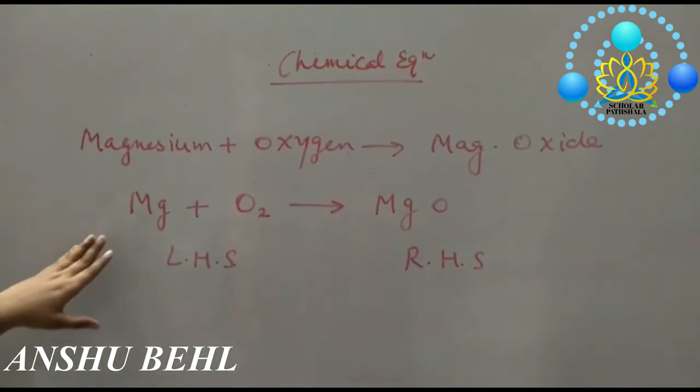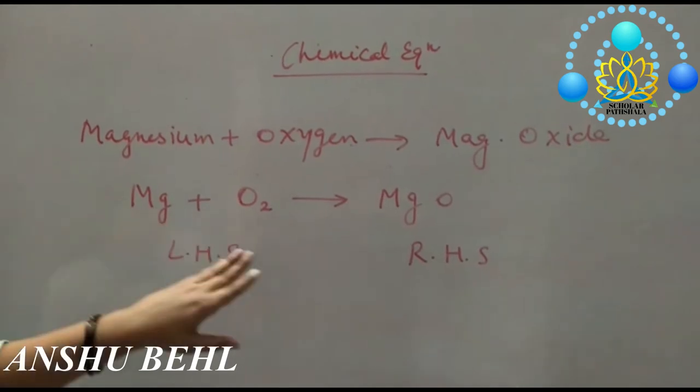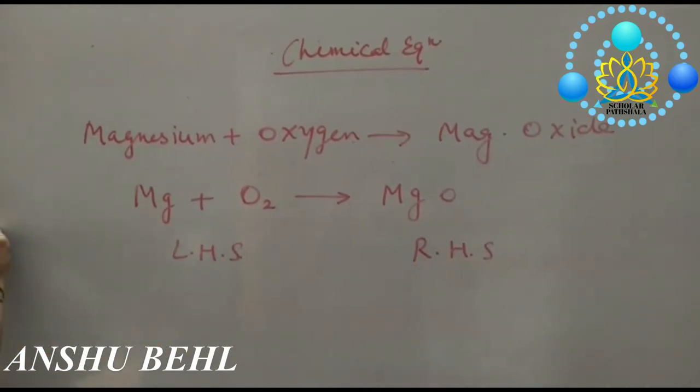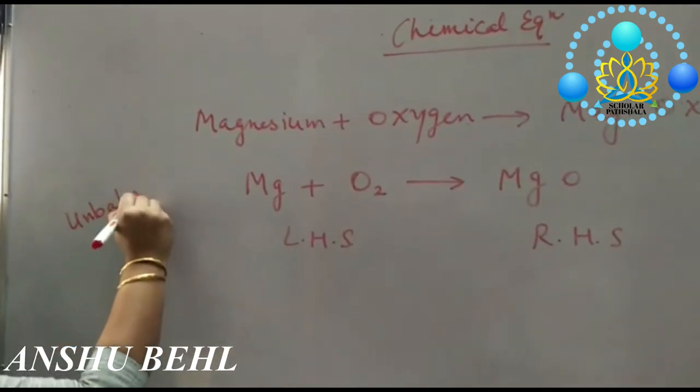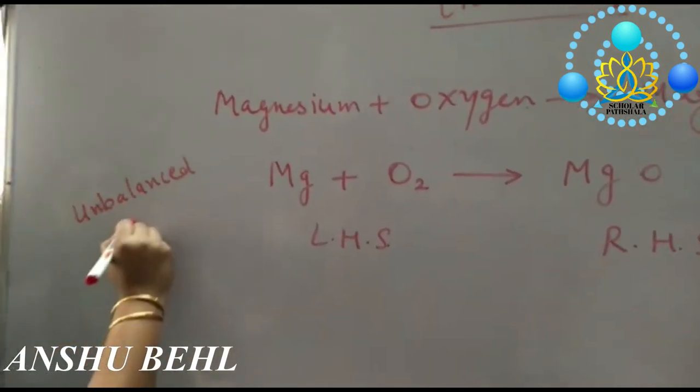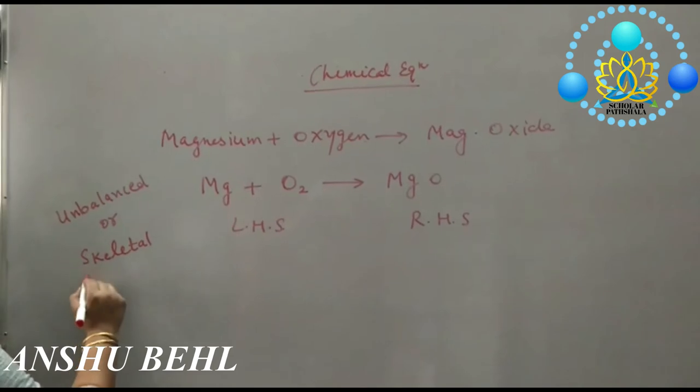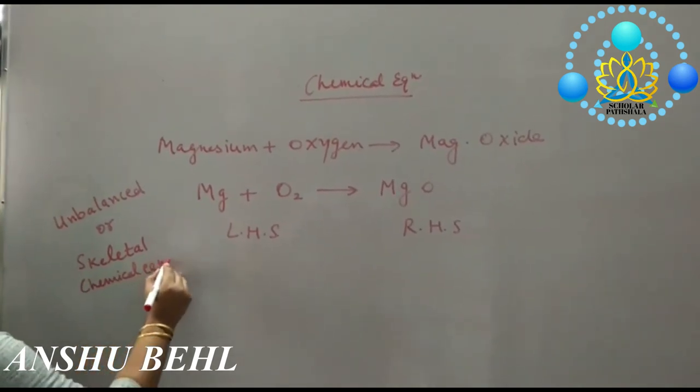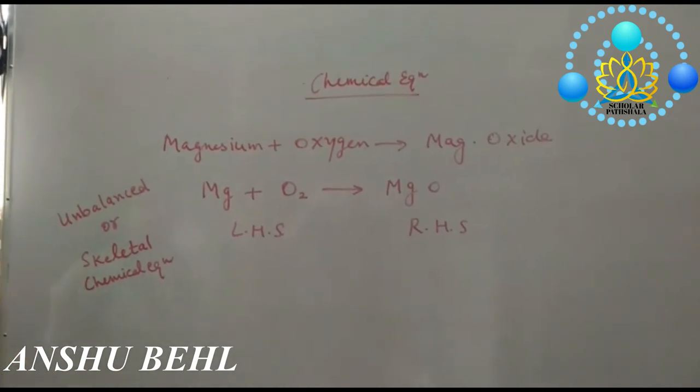We are writing in the form of symbols for all the elements. This equation is unbalanced. Unbalanced equation is also called a chemical equation. Now, this equation needs to be balanced.